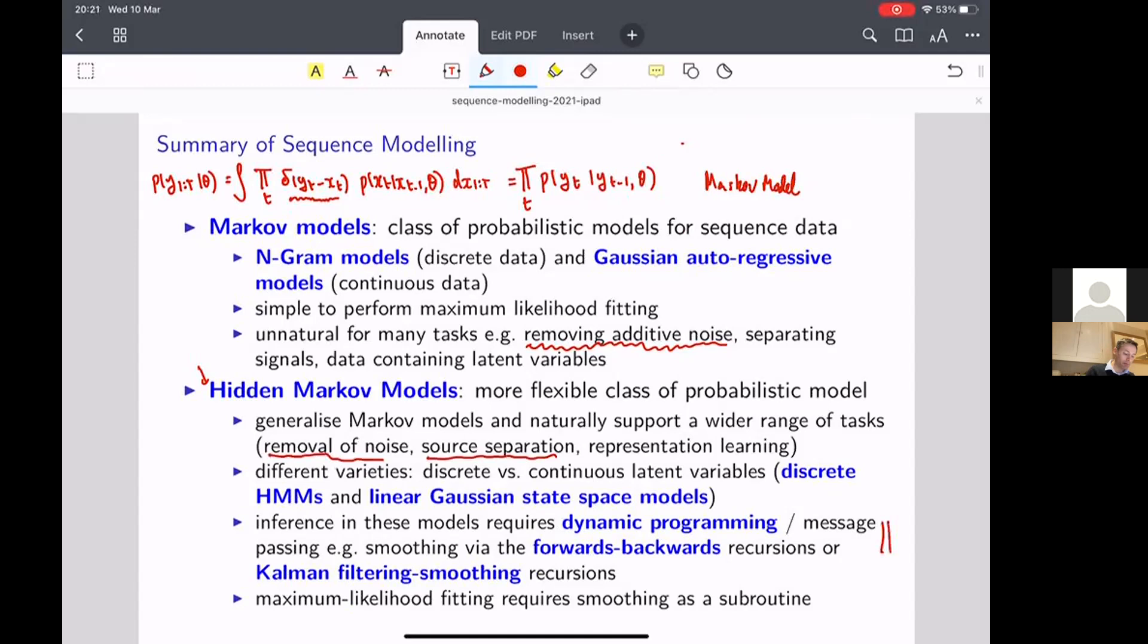Inference in both model classes requires what's called dynamic programming or results in dynamic programming. We saw examples of this, the forwards algorithm or the Kalman filtering algorithm. This is also known as message passing.